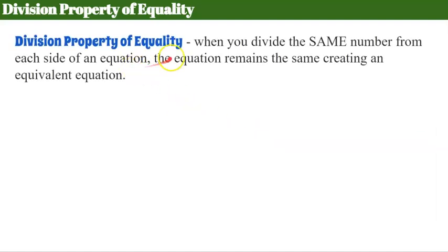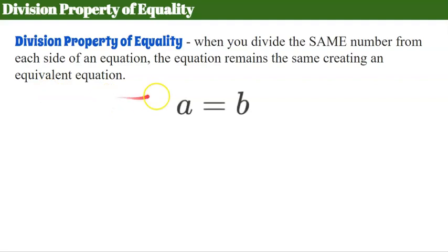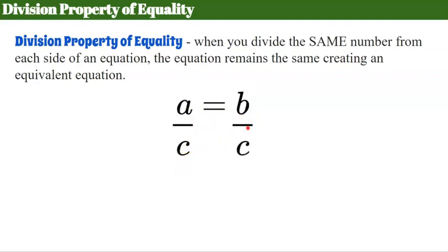Now let's talk about the division property of equality. It states that when you divide the same number from each side of an equation, the equation remains the same, creating an equivalent equation. So if a equals b and I divide a by c, I must also divide b by c, producing an equivalent equation.